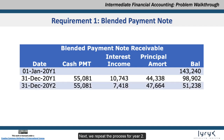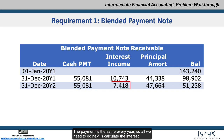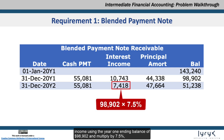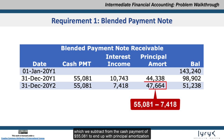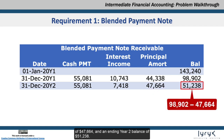Next, we determine the amortization of the principal balance — that's the difference between the cash payment and the interest income we just calculated — so $55,081 minus $10,743 is amortization of $44,338. Then to determine the ending balance we take the previous balance of $143,240. We then repeat the process for Year 2. The payment is the same every year, so all we need to do next is calculate the interest income using the Year 1 ending balance of $98,902 and multiply by 7.5% to end up with interest of $7,418, which we subtract from the cash payment of $55,081 to end up with principal amortization of $47,664 and an ending Year 2 balance of $51,238.